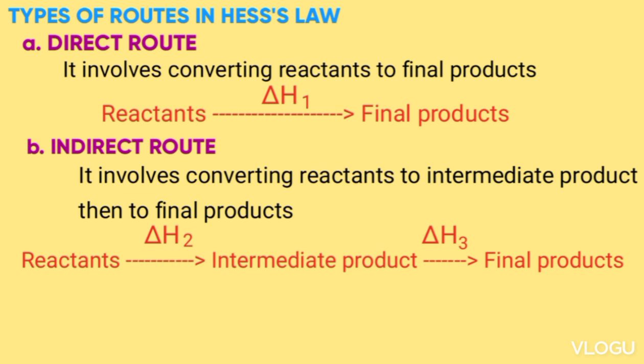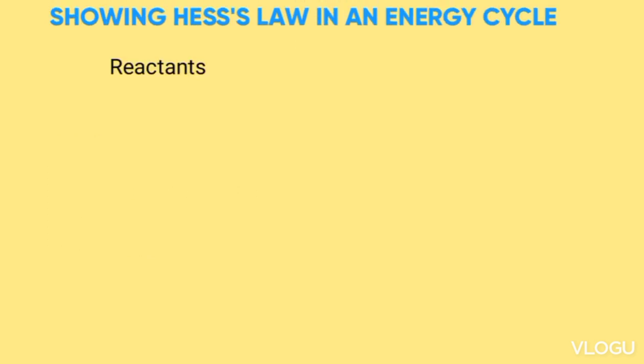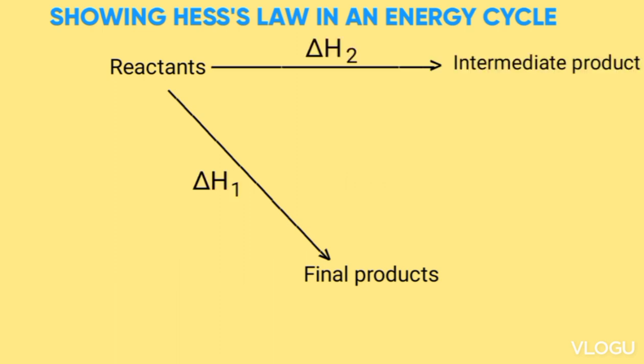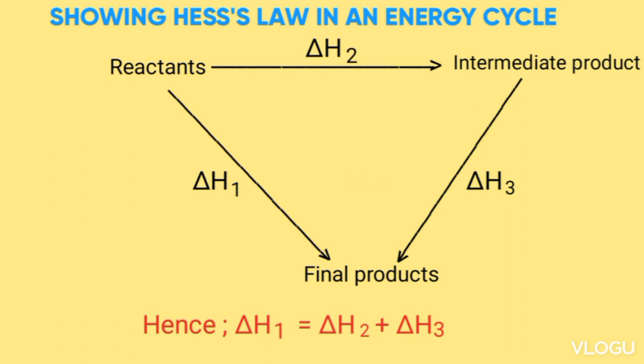This information can be shown in a cycle: reactants → final product is the direct route with ΔH₁; reactants → intermediate product with ΔH₂, then intermediate product → final product with ΔH₃ is the indirect route. Hence, ΔH₁ = ΔH₂ + ΔH₃.